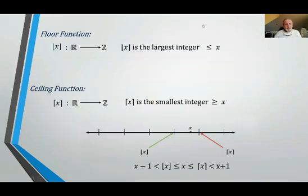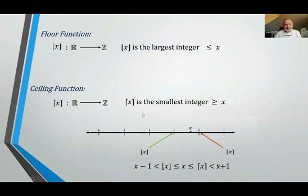The floor function is a function from the set of real numbers to the set of integers, and the floor function of x is the largest integer less than or equal to x. The ceiling function is also from R into Z, and the ceiling function of x is the smallest integer greater than or equal to x.